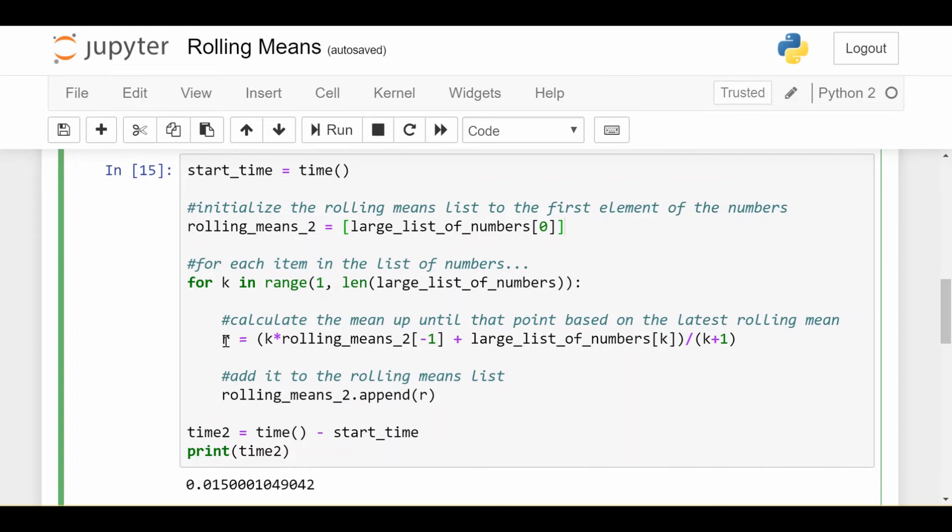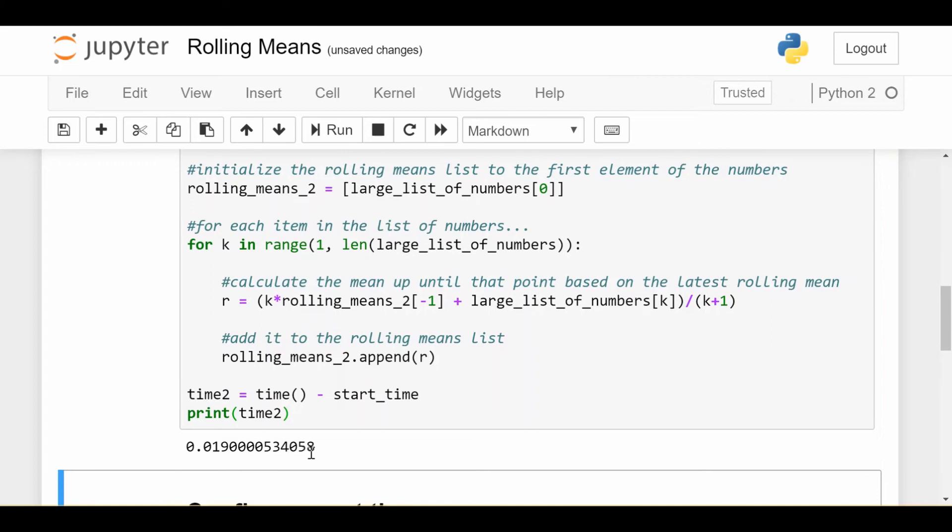So here's where the meat of this problem, this efficient solution comes from in this mathematical formula which we drew on the whiteboard. You take k, which is the current iteration you're in, times the latest rolling mean you have. So this notation, if you haven't seen it, just means take this list and give me the negative first element or the last element. So we take the most recent rolling mean we have multiplied by k, add the current number that we're looking at in the big list and divide that whole thing by k plus one. We take that new rolling mean, we append it to our rolling means two list and that's it. We just do that for every iteration. At the end, we calculate how long it took.